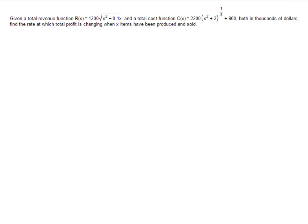In this problem, we're given formulas for revenue and cost, and we're asked to find the rate at which the total profit is changing when x items have been produced and sold. Notice that they're asking about when x items have been produced and sold. That means that what we're looking for here is a formula rather than a number.